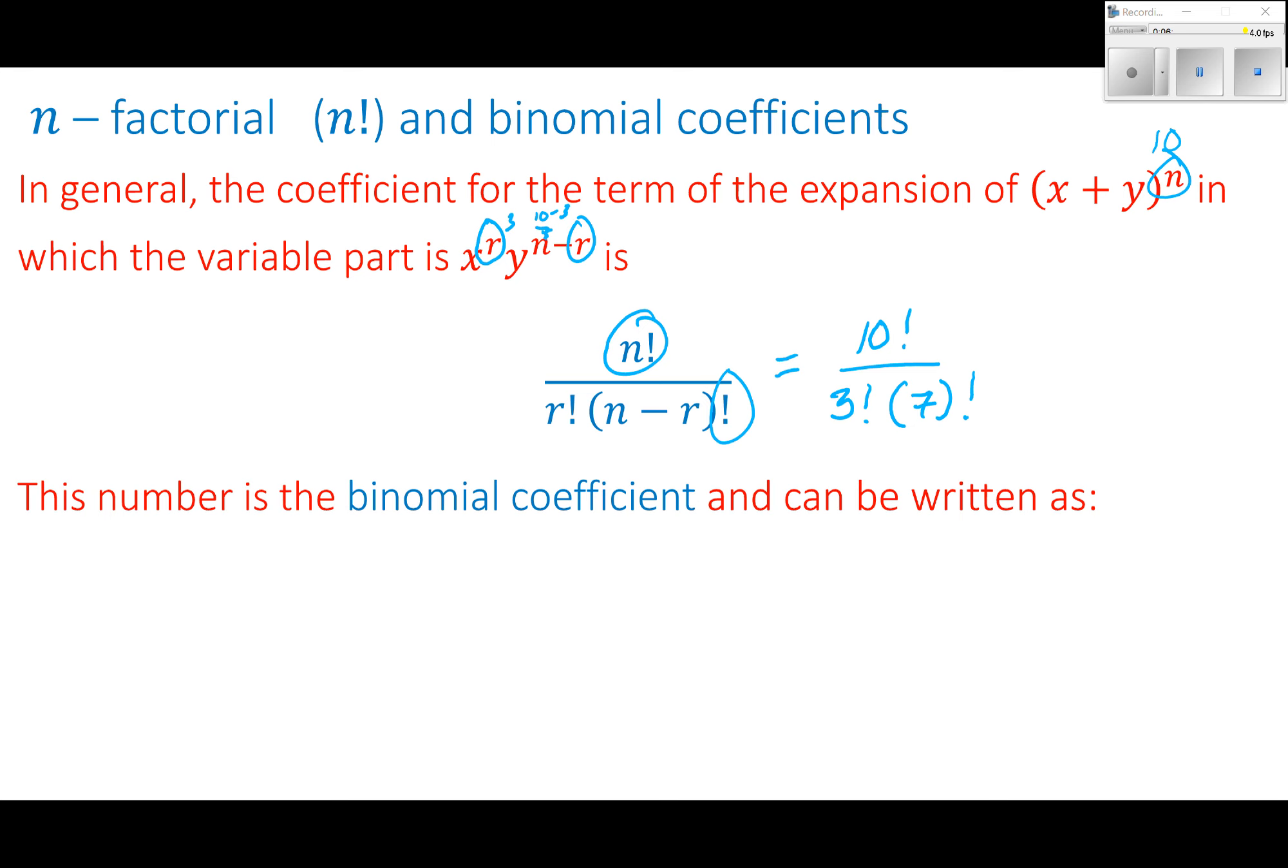This number is the binomial coefficient. And now we can write it with some shorthand notation. You will see it written like this in parentheses with the n over the r. It's not a fraction. Or you can see it as subscripts. So a subscript of n, c subscript of r. And how we will read this, how you will hear me say it, how you might see it written, is n choose r.